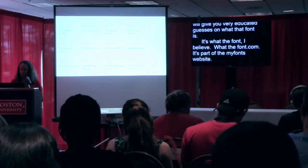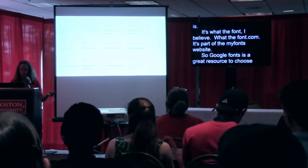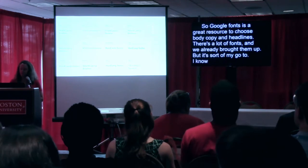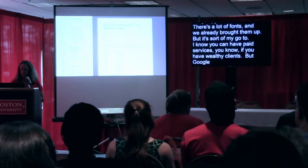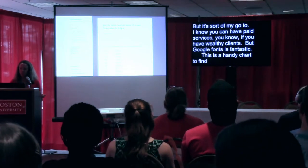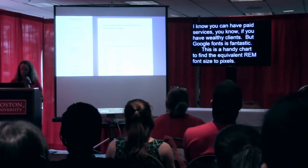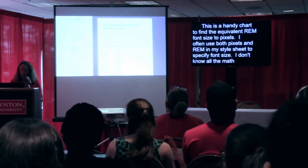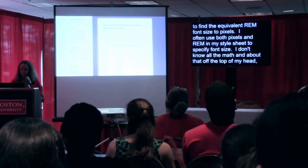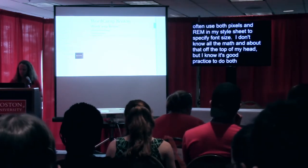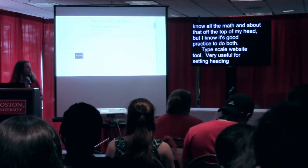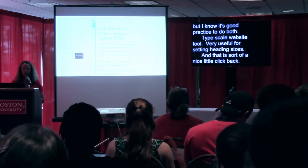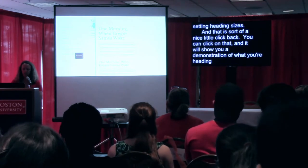Google Fonts is a great resource to choose body copy and headlines — it's my go-to. There's also a handy chart to find the equivalent rem font size to pixels. I often use both pixels and rem in my child theme stylesheet to specify font size. The TypeScale website tool is very useful for setting heading sizes — you can plug in a font, click the blue box, and it shows a demonstration of how your headings and body copy look together.